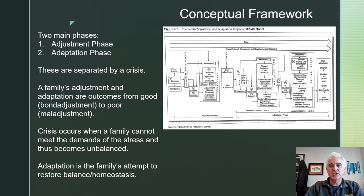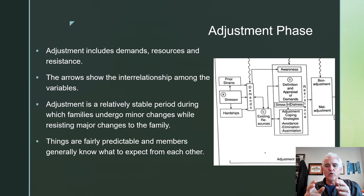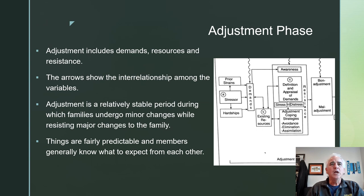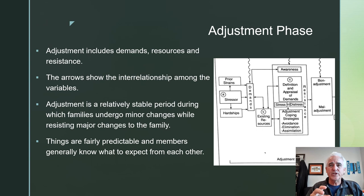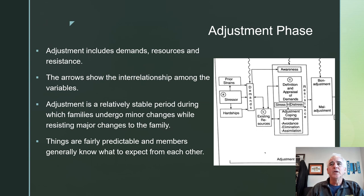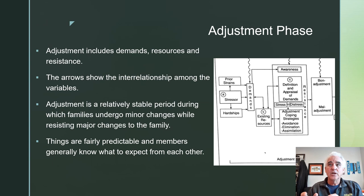Now we have the Adjustment Phase. Adjustment includes the demands, resources required for change, and resistance to change. The arrows show the interrelationship between the variables. A stressor — A — is related to prior strains and current hardships. That leads to the strains, stressor, and hardships demands on the family. Those demands tap into existing resources, but also into awareness, definition, and appraisal of the demands. The definition could be that the stress is good stress — eustress — or distress, which means bad.